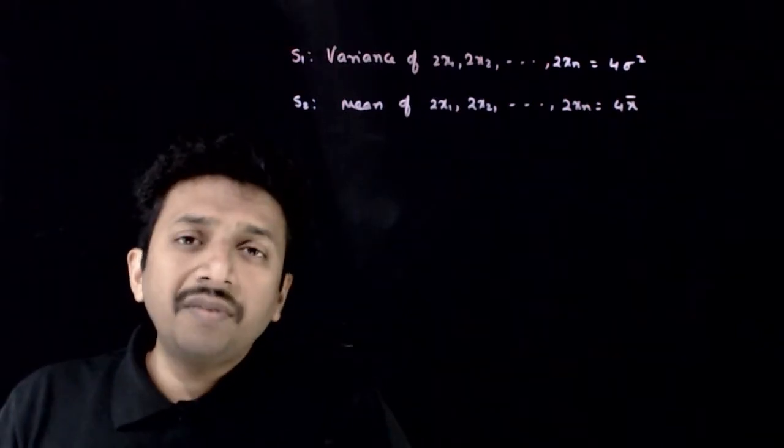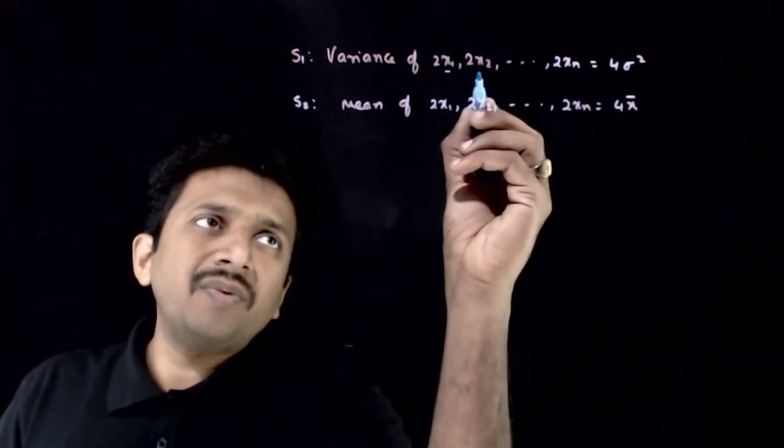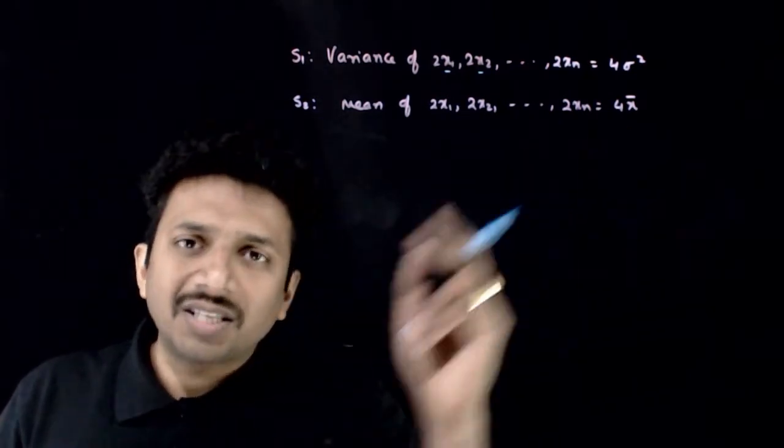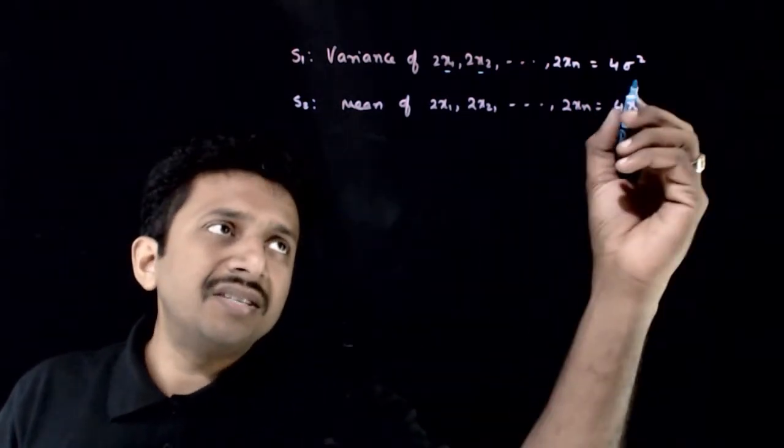Welcome students. In this question, you are given readings x1, x2, x3, and so on up to xn. The mean of those readings is x̄ and the standard deviation is σ.